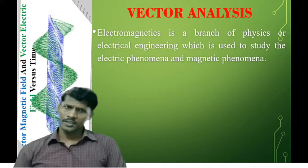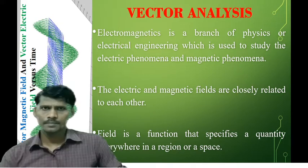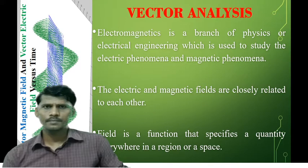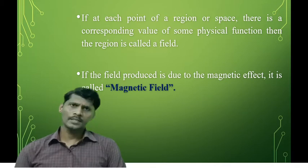Electric field and magnetic fields are closely related to each other. A field is a function that specifies a quantity everywhere in a region or space. If at each point of a region or space there is a corresponding value of some physical function, then the region is called a field. If the field produced is due to a magnetic effect, it is known as a magnetic field.